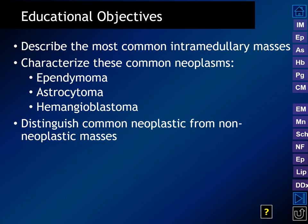Our educational objectives: to describe the most common intramedullary spinal cord masses; to characterize three common primary tumors — ependymoma, astrocytoma, and hemangioblastoma; and to talk about how to distinguish neoplastic from non-neoplastic masses involving the spinal cord itself.